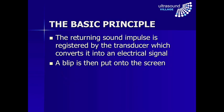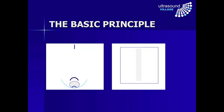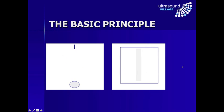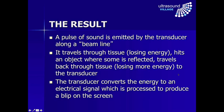The returning sound pulse hits the transducer, is converted into an electrical signal, sent to the machine, the machine processes that and puts a blip onto the screen. So we have the original pulse emitted, a reflection from the front of the object, a reflection from the back of the object — they travel back towards the transducer. When the first returning signal hits the transducer the machine puts a blip on the screen; a moment later the second returning impulse hits and the machine puts a second blip on the screen.